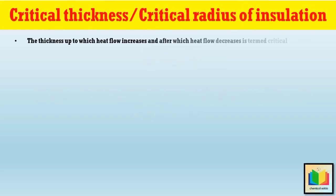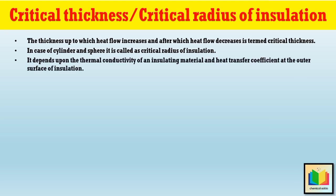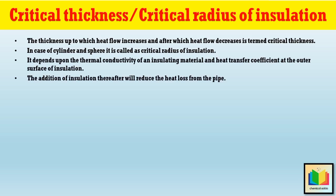The thickness up to which heat flow increases and after which heat flow decreases is termed the critical thickness. For a cylinder and sphere, it is called the critical radius of insulation. The critical thickness of insulation is the outer radius of insulation where the rate of heat flow is maximum. It depends upon the thermal conductivity of the insulating material and the heat transfer coefficient at the outer surface. Addition of insulation beyond this point will reduce heat loss from the pipe.